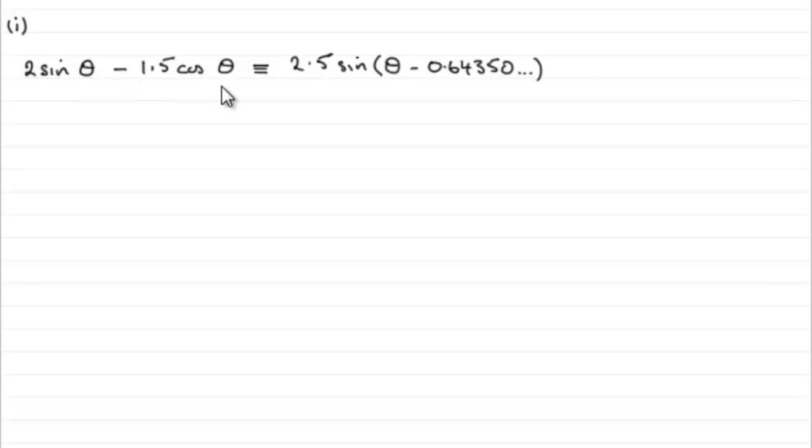Now, finding the maximum value of this then is very easy when you've got it expressed in this form, because it turns out to always be the r value, in this case 2.5. So the answer is that the maximum value is 2.5. But why? Okay, let me explain why.